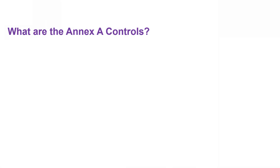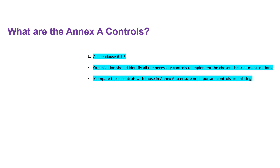In this lecture, we will discuss about Annex A controls. Let us first understand what Annex A controls are and how they are linked to the ISO 27001 standard. As per clause 6.1.3 of the standard, organizations should identify all the necessary controls to implement the risk treatment options, and then compare these controls with those in Annex A to ensure no important controls are missing. This is how Annex A is linked to ISO 27001.